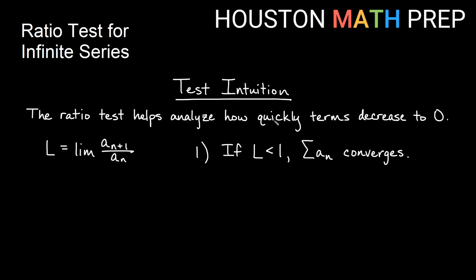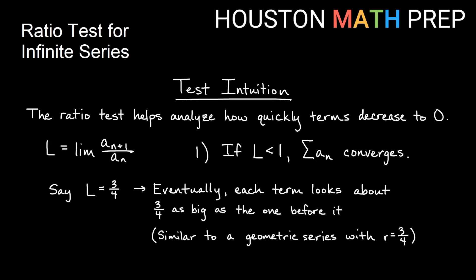Some intuition for the ratio test: it helps us analyze how quickly terms decrease to zero. We compare consecutive terms as a ratio. If the limit is less than 1 — say the limit is 3/4 — that means eventually, whether it's hundreds, thousands, or billions of terms down the line, each next term looks about 3/4 as big as the previous term, and it behaves that way forevermore in the series.